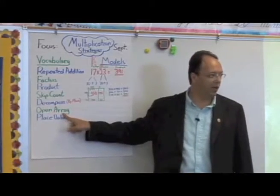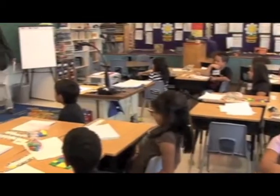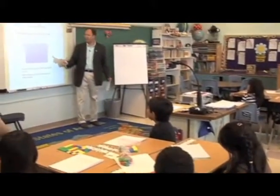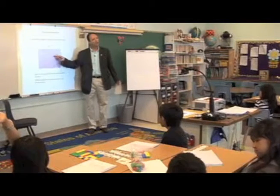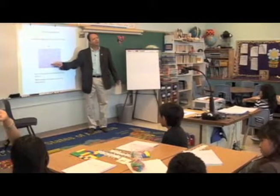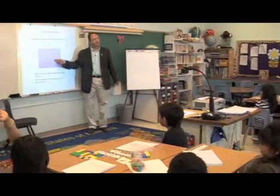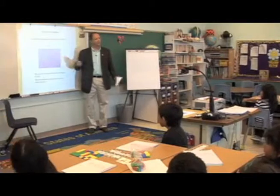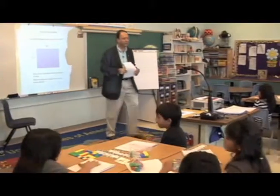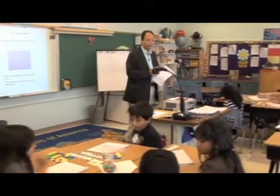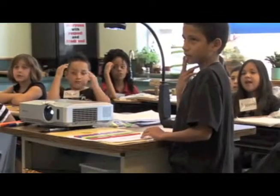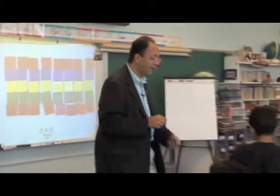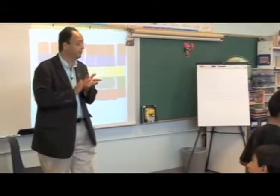Everybody say array. And what numbers are easier for you to think about so that we can find out our product or our area? So go ahead and start your investigation — this one you're doing by yourself. Everybody say: eight groups of five. So we have eight groups of five. Let's give Cesar and his partner a round of applause.